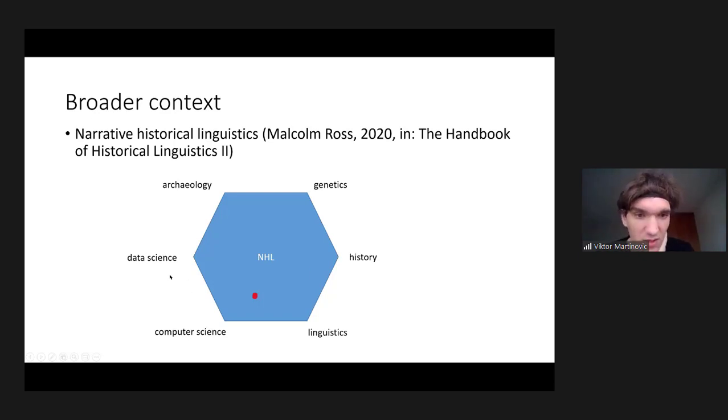I have added two points that aren't mentioned by Ross, namely data science and computer science, because I think all of these four are to some degree based on data that we elicit in one way or another. We have to analyze it most of the time manually, but I think we should try to see how far we can go with computational models, if we can discover some patterns that we maybe didn't discover so far with our manual methods.